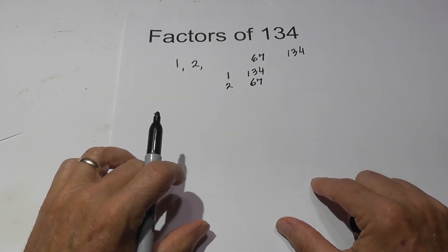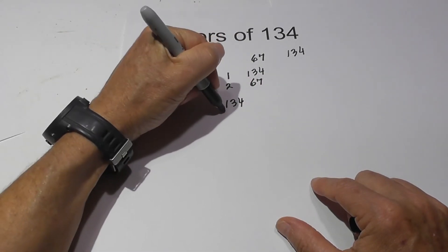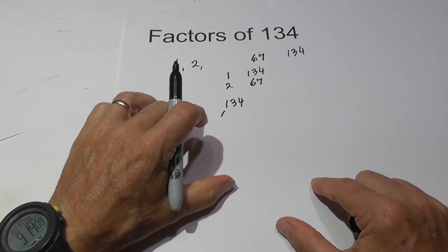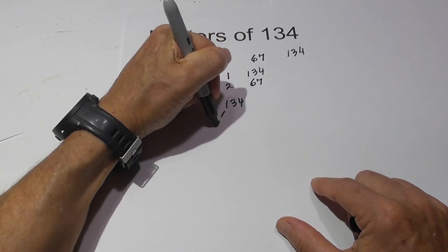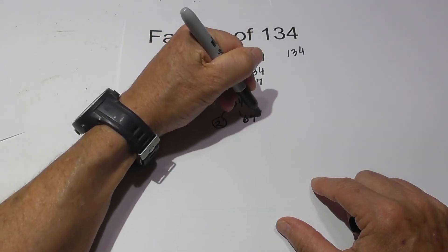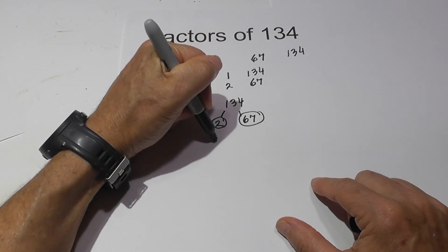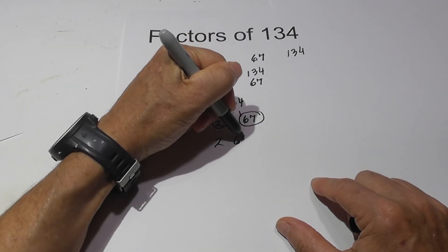Now let's complete a factor tree for the prime numbers. And we have 134. It is an even number so we'll begin with 2 times 67. Both of these numbers are prime so we are finished. So the prime numbers of 134 are 2 and 67.